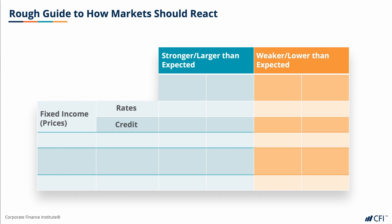Let's look at business conditions. If a forecast for business conditions is stronger than the market expects, it means that the potential for central banks to possibly tighten monetary policy and raise rates is higher, so bond prices fall. The opposite is also true. If an economic release indicates that business conditions are weaker, then the chance that central banks will loosen monetary policy goes up. Hence, fixed income rates products should rally and prices will go up.